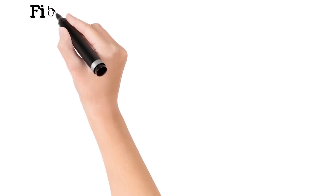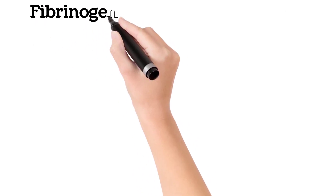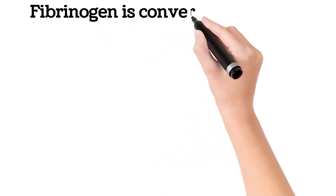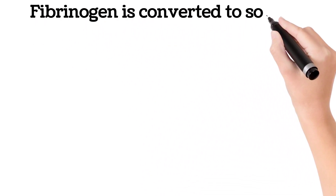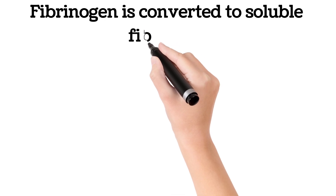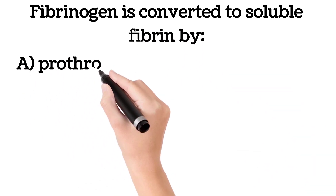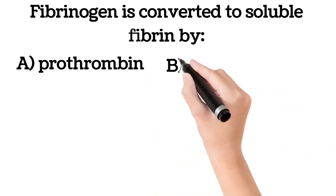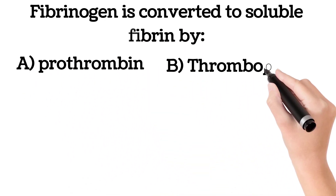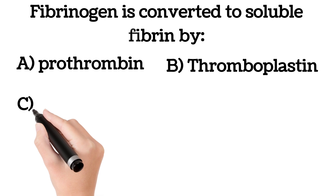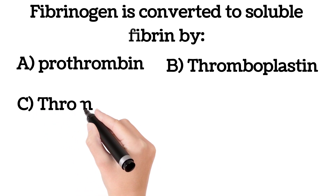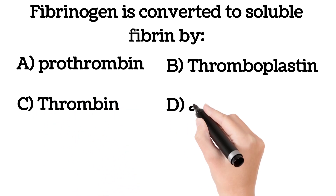Fibrinogen is converted to soluble fibrin by: A. Prothrombin, B. Thromboplastin, C. Thrombin, D. All of the above.